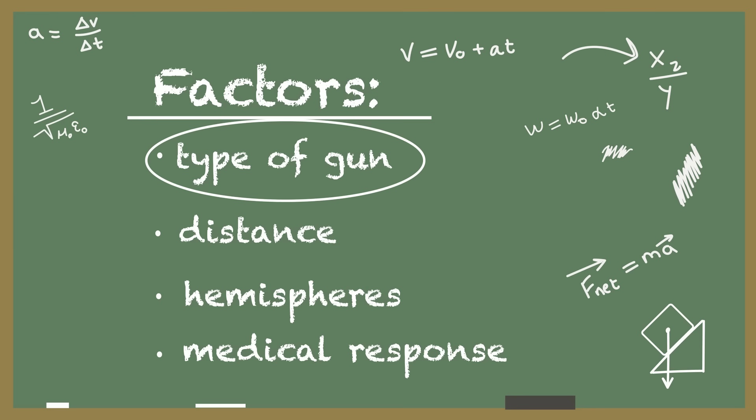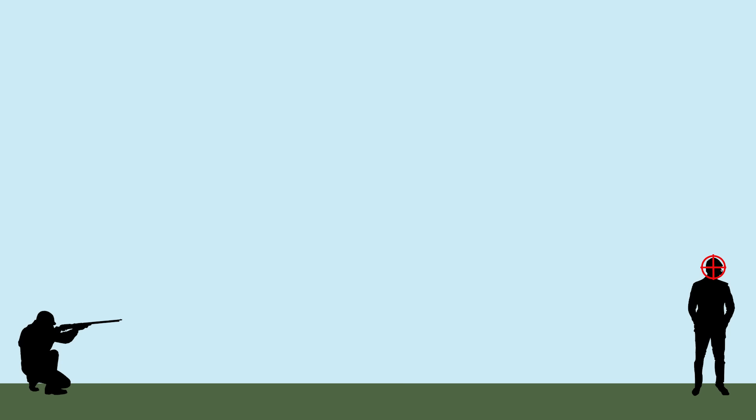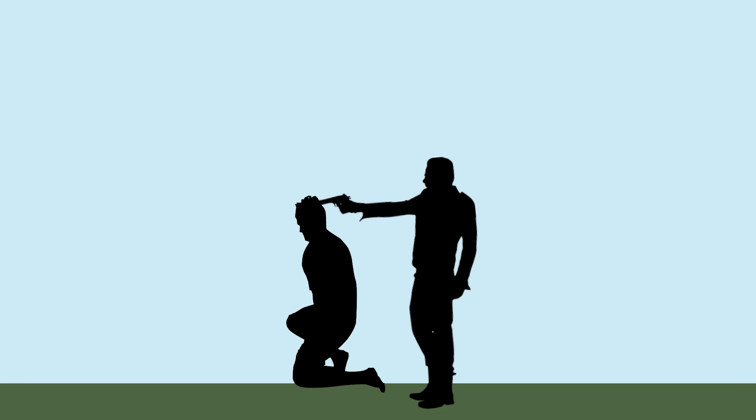The next factor is distance. The farther the distance, the more time the bullet has to lose energy. Obviously, if you are 150 yards away from a low-powered firearm, you have more chances of surviving. The opposite of a long-distance shot is a contact shot, where the gun is placed against your head and then fired.